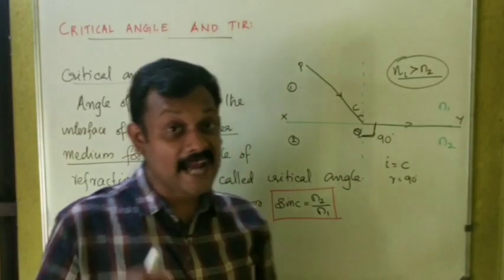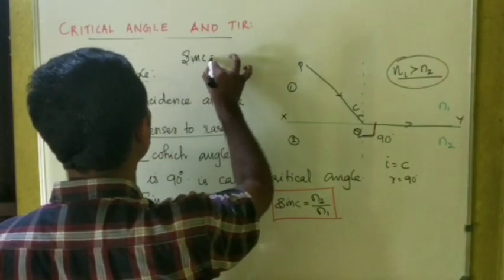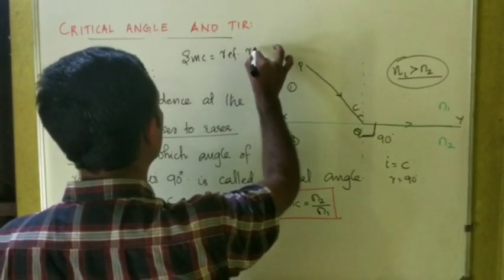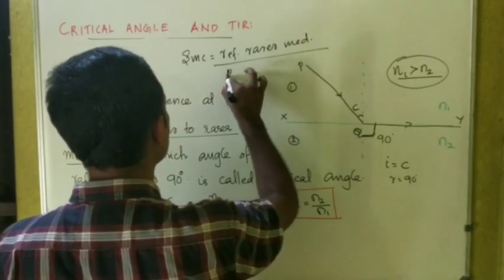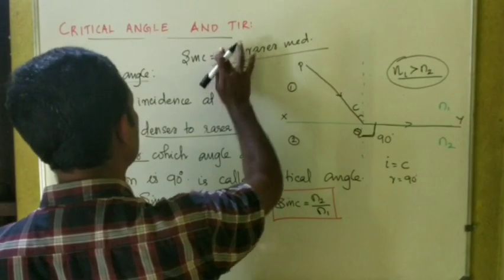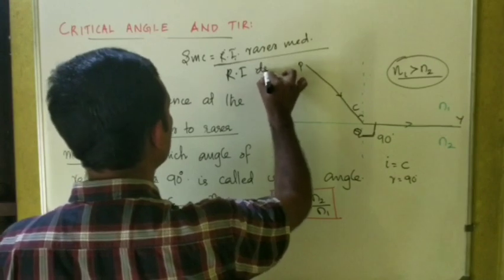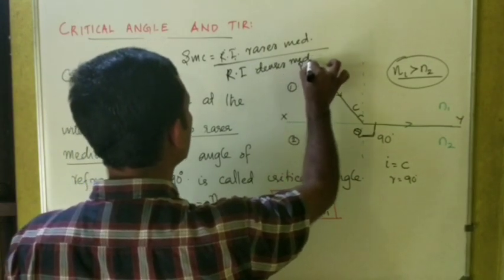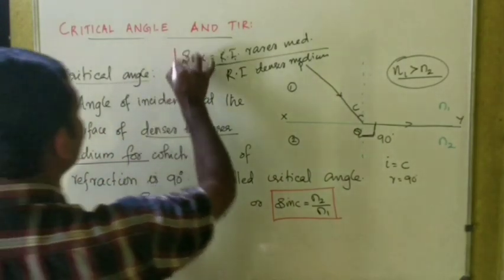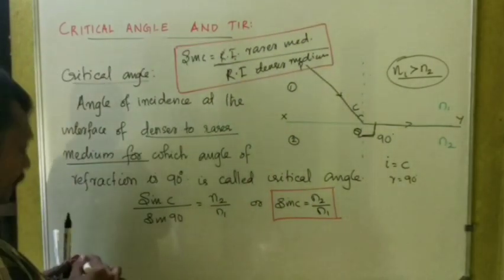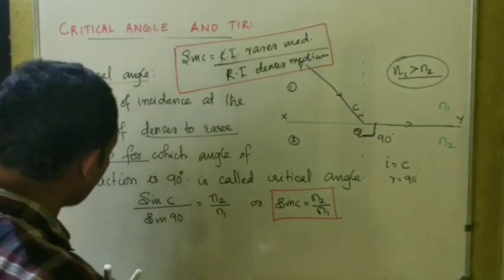So sin C = N2/N1, where N2 is the refractive index of the rarer medium and N1 is the refractive index of the denser medium. Therefore, sin C equals the refractive index of the rarer medium divided by the refractive index of the denser medium. This formula will easily give you all answers related to the critical angle.